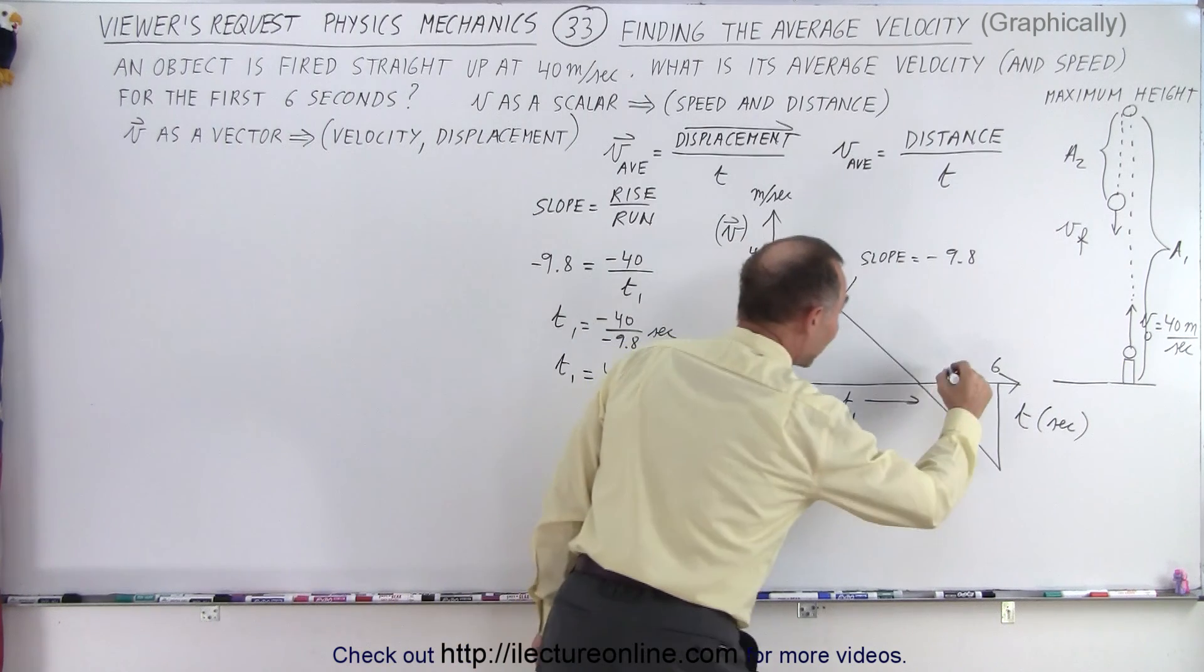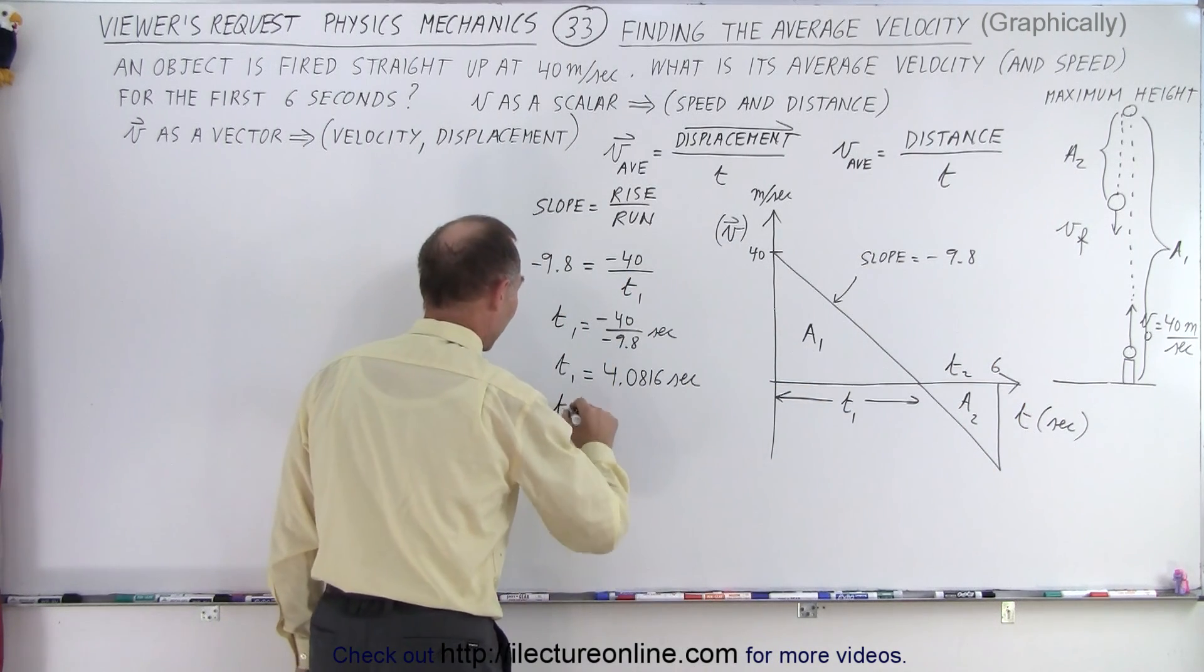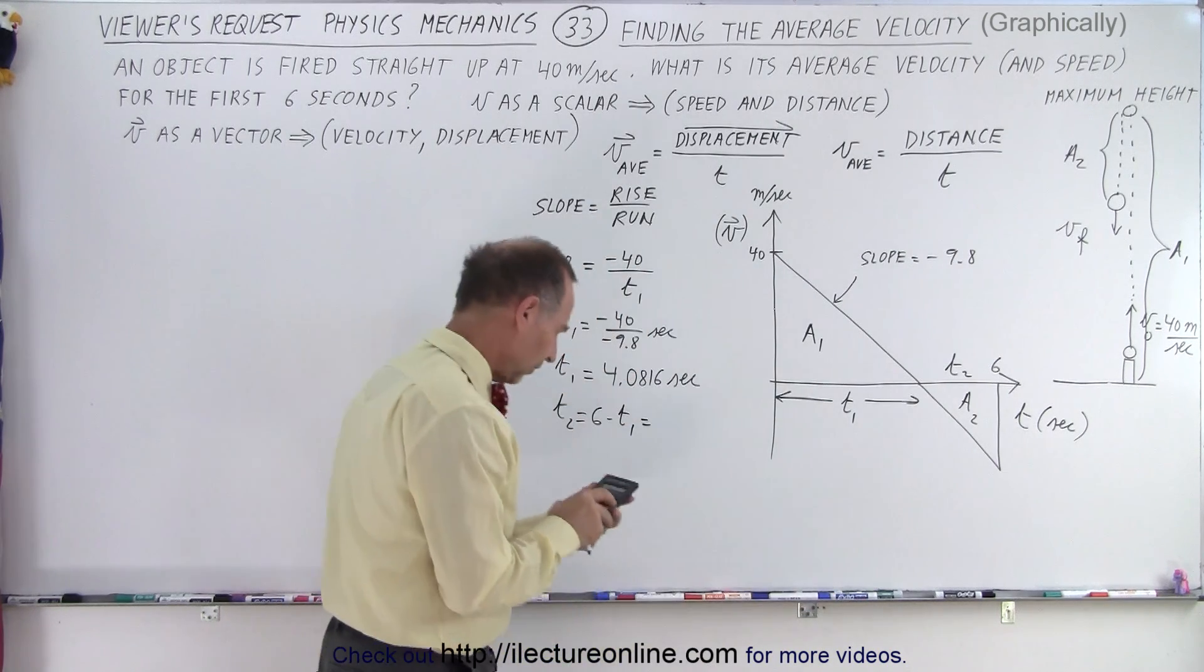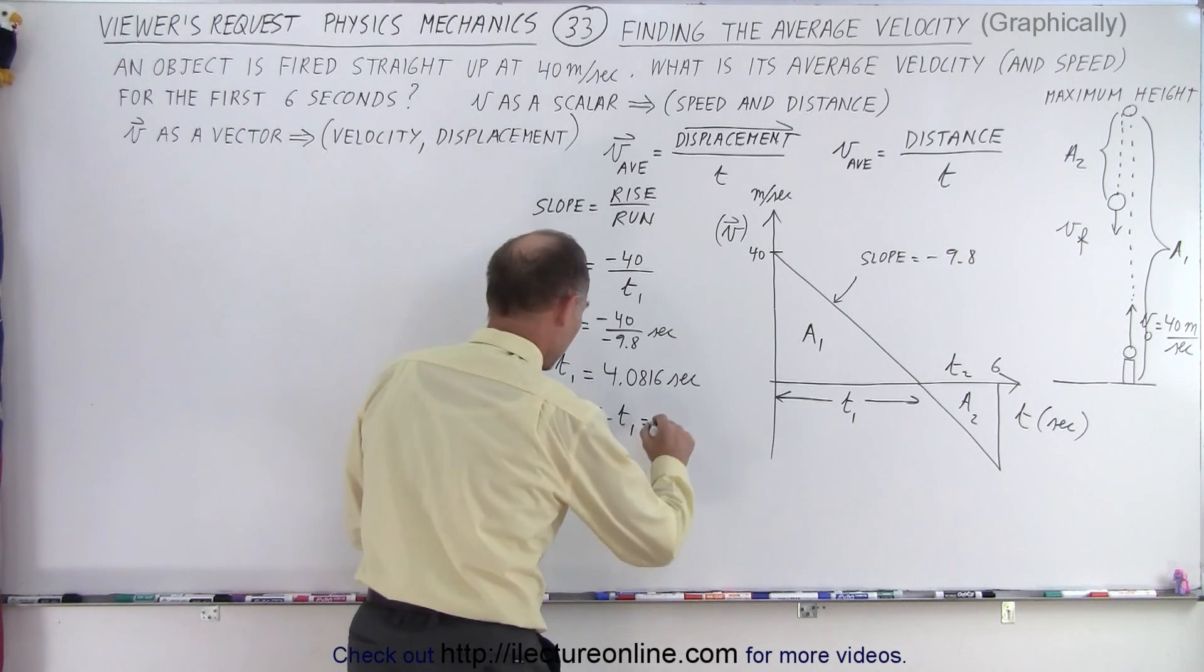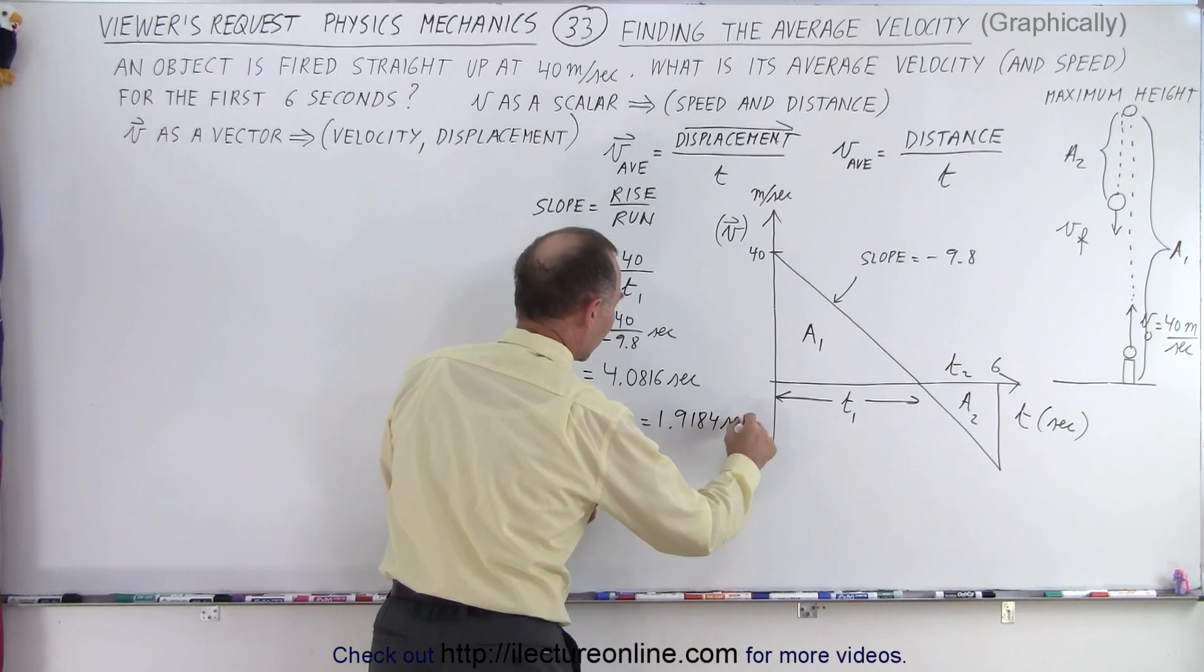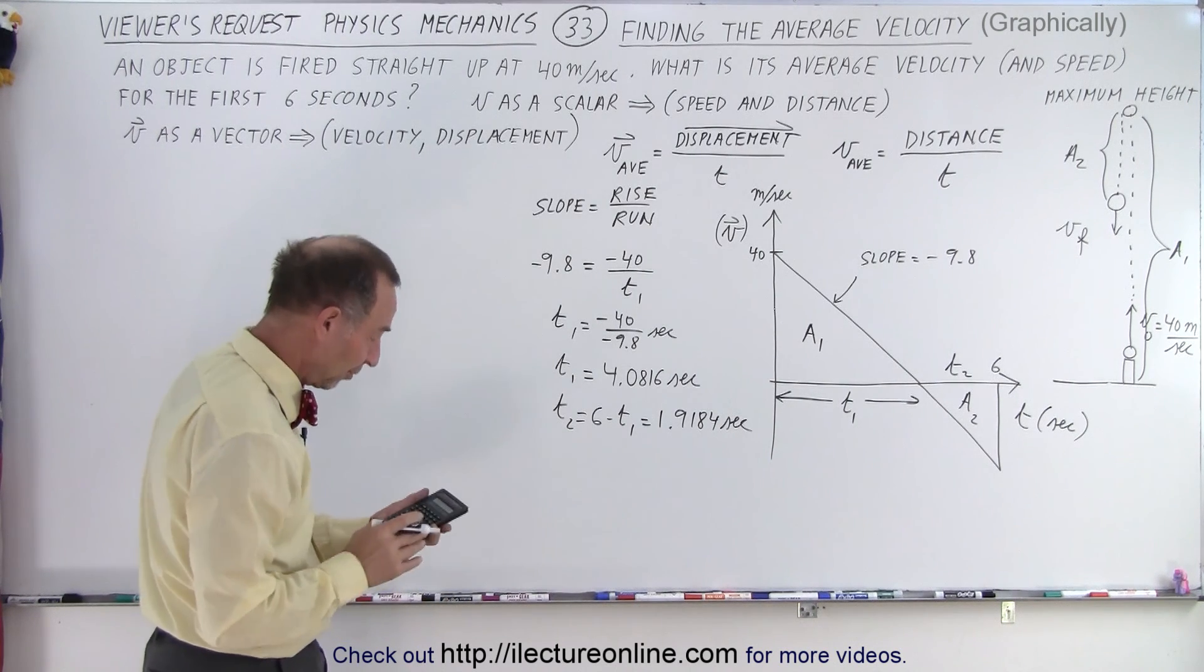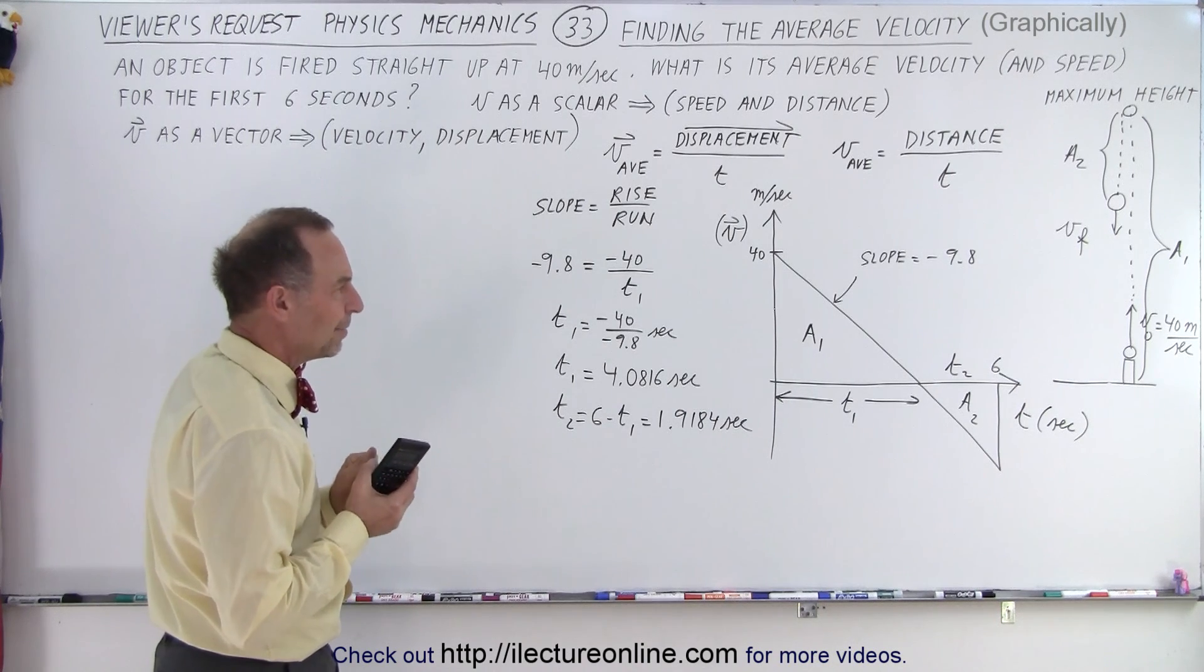Which means that time 2 is going to be 6 minus that. So time 2 is equal to 6 minus time 1, which is 1.9184 seconds. I keep a few extra non-significant figures just so I don't have calculation errors.